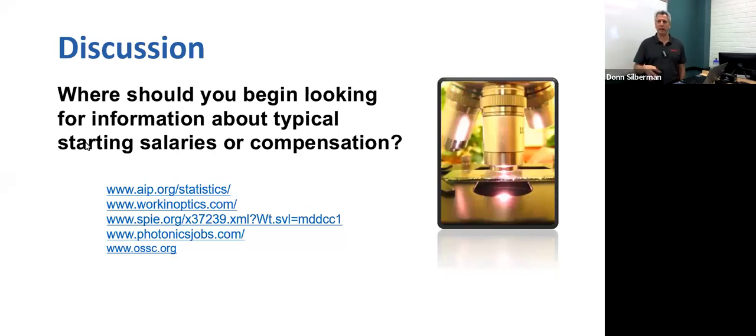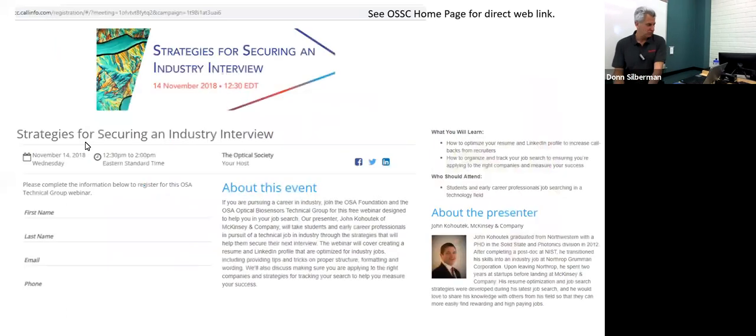Because I think you're all younger than I am. That's for sure, right? So, and here's one, I think this is tomorrow, right? Tomorrow, strategies for securing an industry interview. So, this is for you. I got this from OSA. And you can, and if you go to the OSSC website, there's an image like this and a link for you to register for this. It's a webinar, right? It's 12.30 Eastern time. So, 12.30 Eastern time is 9.30 California time, right? So, if you have an opportunity, and it's probably going to be recorded. So, if you're busy, register for it. And then you can get the recording and see what they have to say. Because things like this, I don't see these types of things coming up that often. And so, this person, John, from McKinsey & Company.